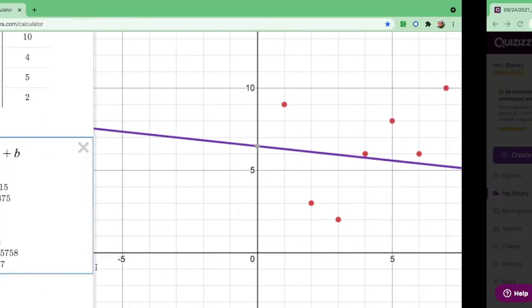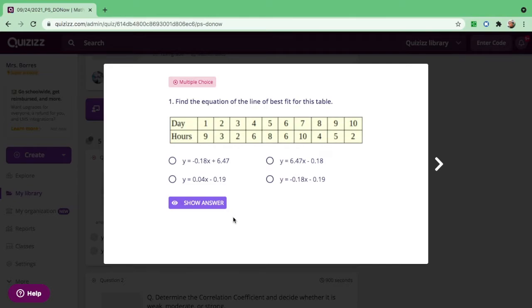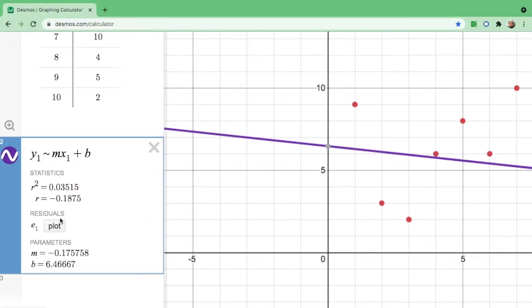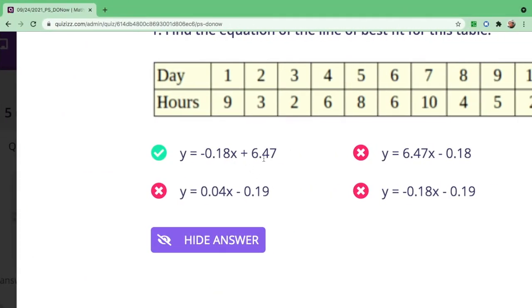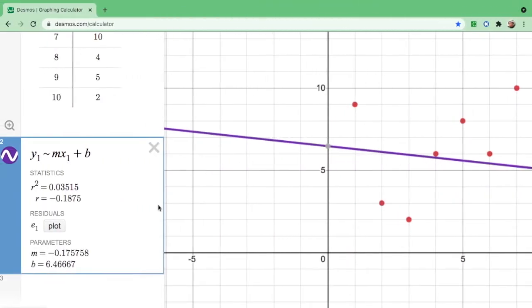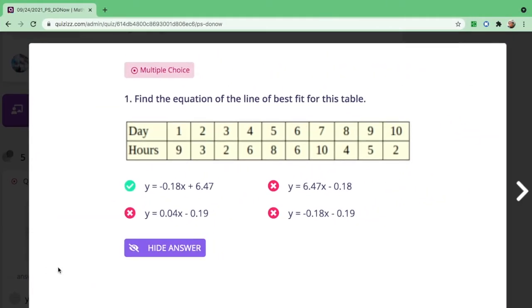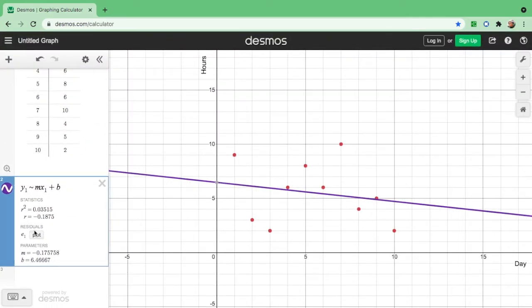Now, let's go back to the choices. So what is the equation of a line of best fit for this data or for this table? So let's show the answer. And the correct answer is y equals negative 0.18. Where did we get that? From the slope over here, x plus 6.47. And that is our y-intercept, which is 6.47 rounded off.